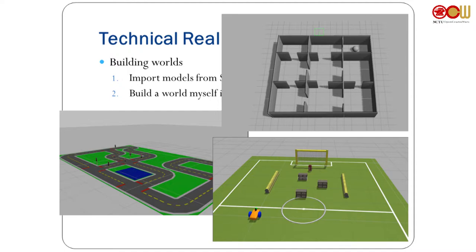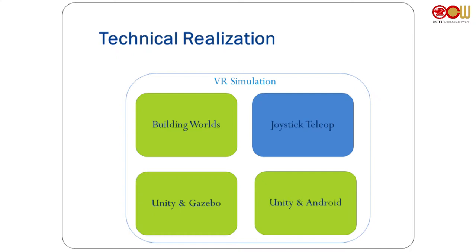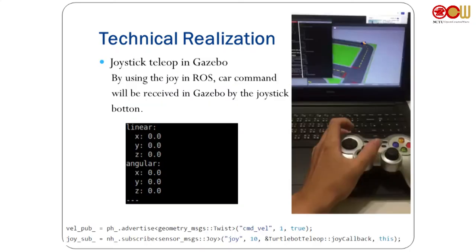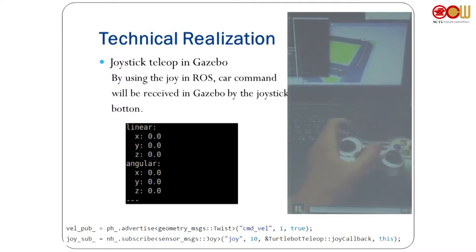The second part is joystick teleoperation. Similar to DuckyTown where we use a joystick to control a car, I wanted to do the same in Gazebo. I used the joy axis in ROS — the car in Gazebo receives a linear velocity and angular velocity. When I push buttons, it sends the corresponding linear or angular velocity. You can see a short video of this.